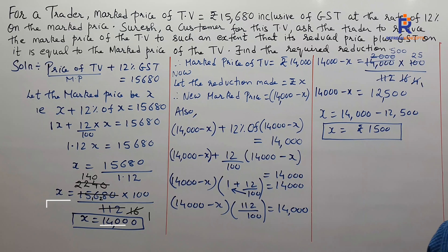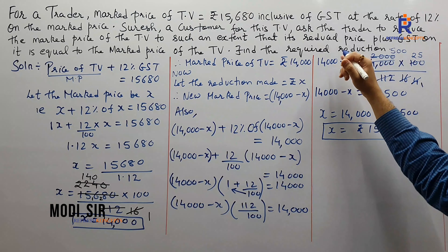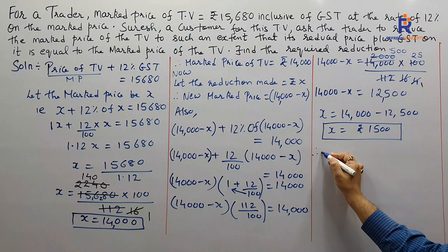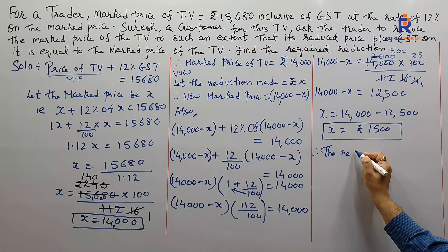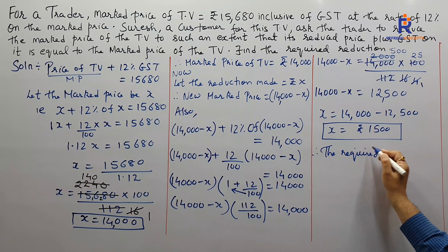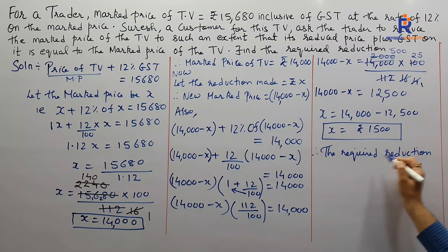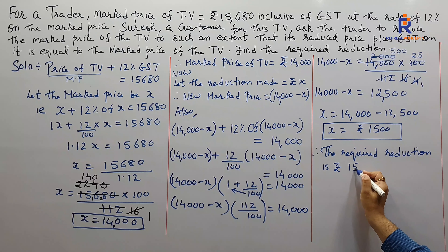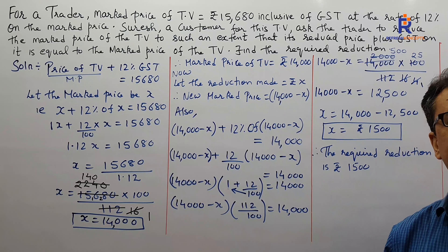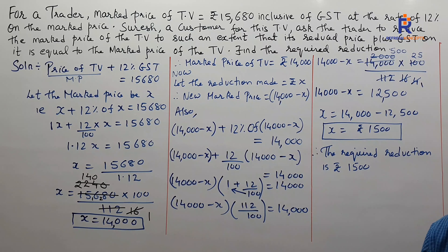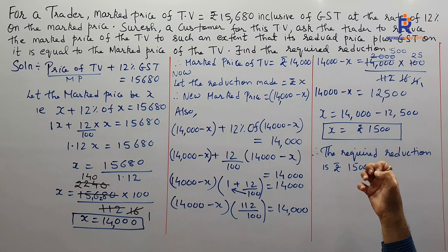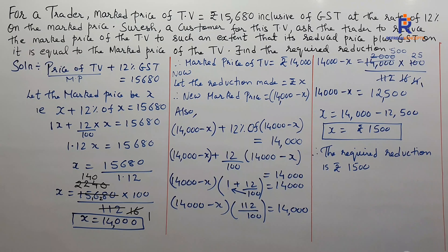Therefore, the required reduction is rupees 1,500. This was a new type of problem where the price including GST is given and we find the reduction such that the new price plus GST on the new price equals the original marked price.